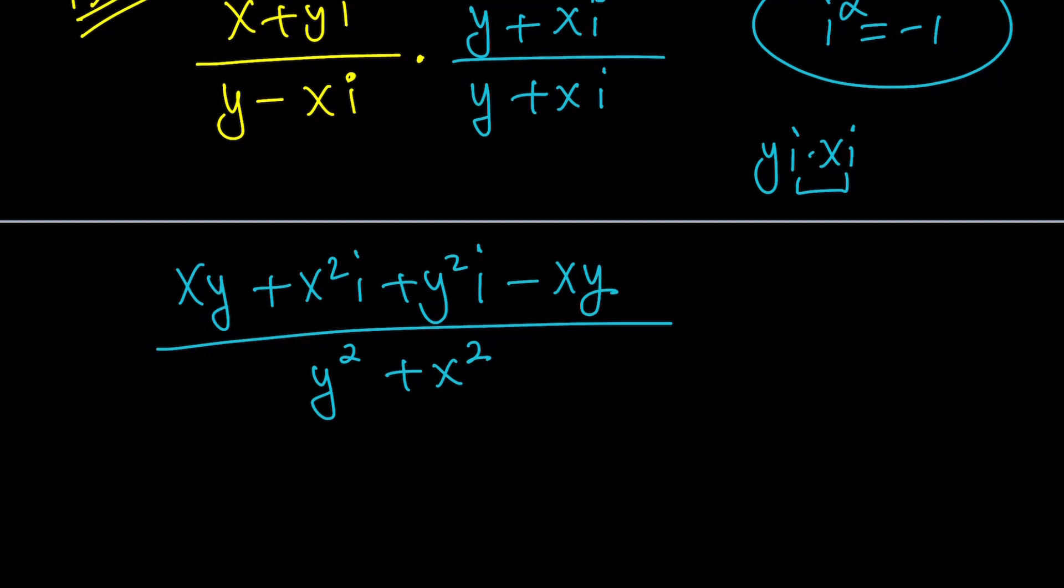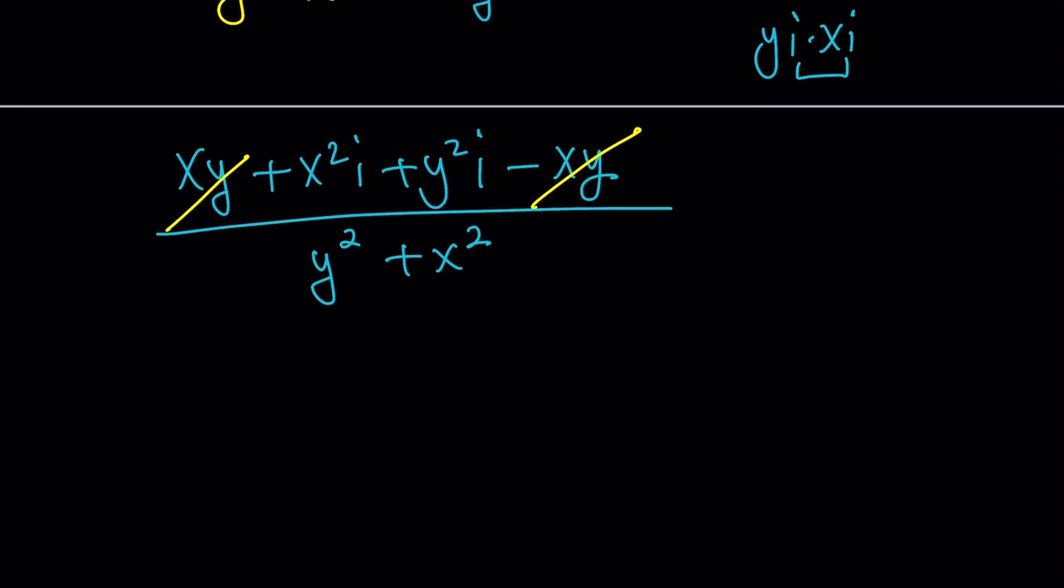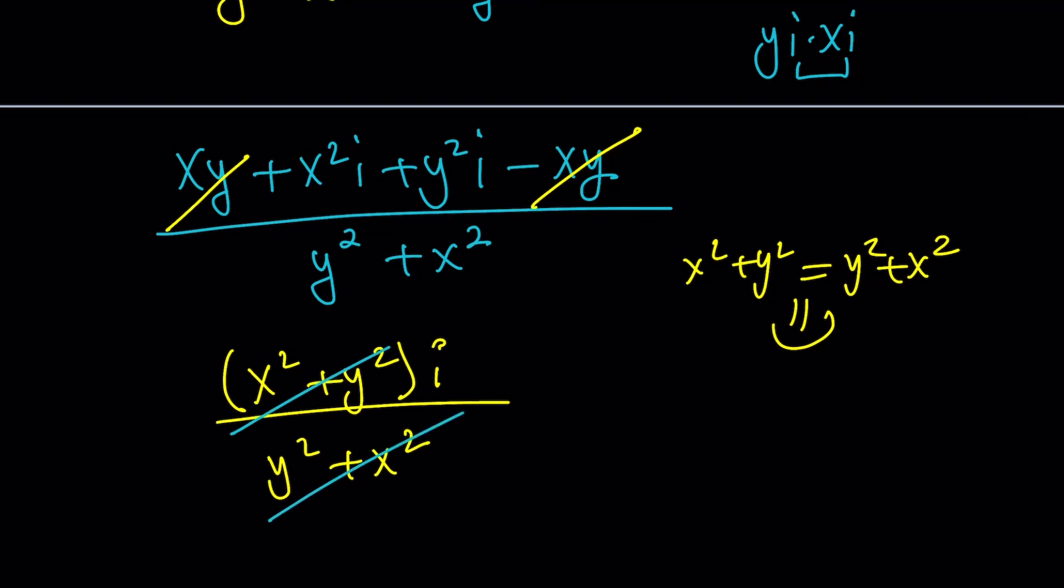Uh-oh. I notice xy minus xy is zero, so they cancel out. Pretend to be surprised if you're familiar with complex numbers. And then we have two imaginary numbers. How do you add imaginary numbers? Easy. You factor out the i, or you just add the imaginary parts. So this becomes x squared plus y squared, all multiplied by i. And at the bottom I have y squared plus x squared. These two cancel out as well, leaving us with just i.